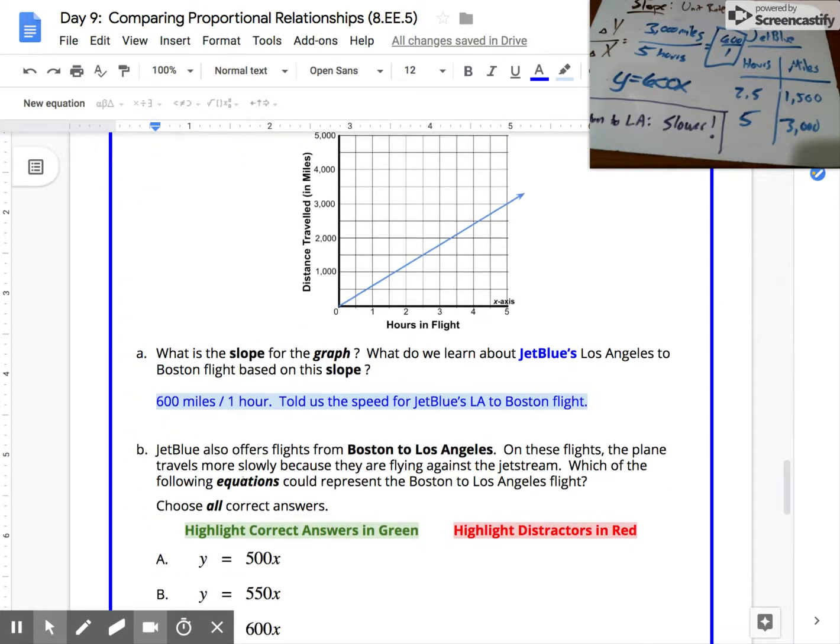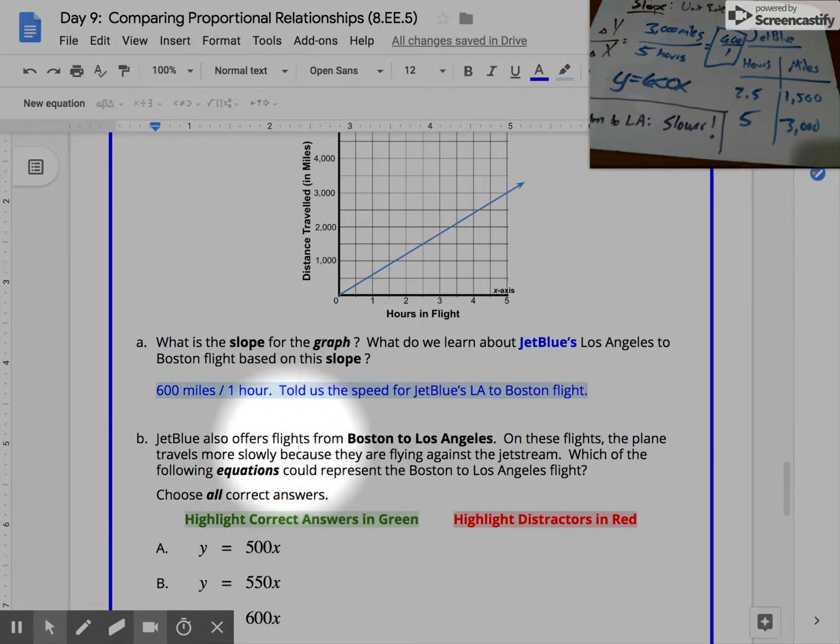As we take a look for part B now, part B says they also offer a flight from Boston to Los Angeles. It's in the opposite direction. It says that on these flights, the plane travels more slowly because they are flying against the jet stream. So they fly into the wind. The Boston to Los Angeles flight is going to go more slowly. We're asked which of the equations below could represent the Boston to Los Angeles flight and to choose all correct answers.